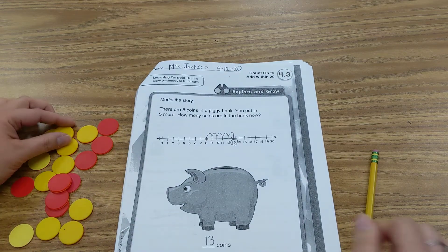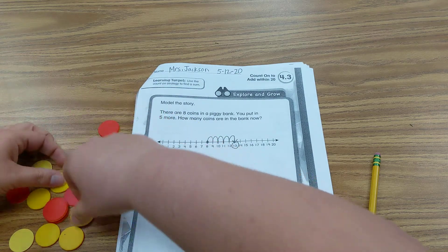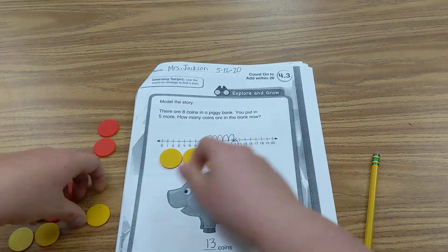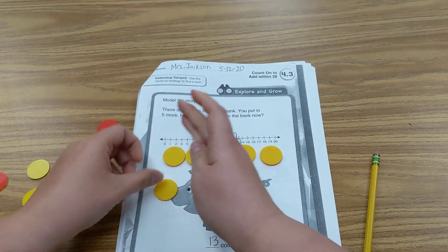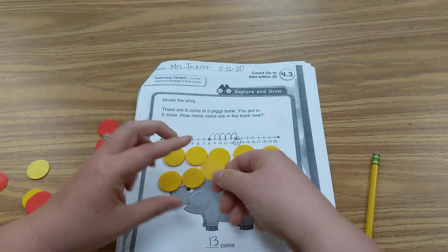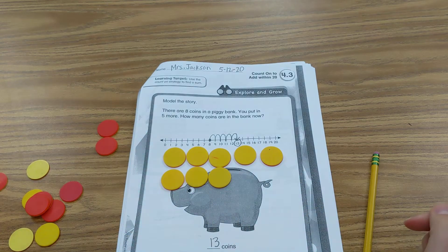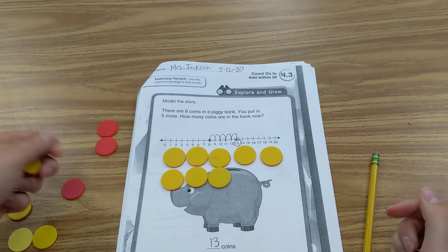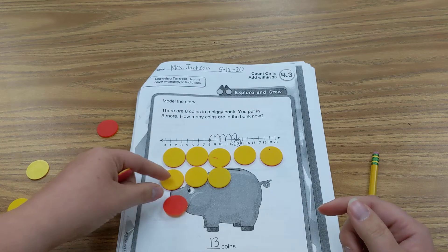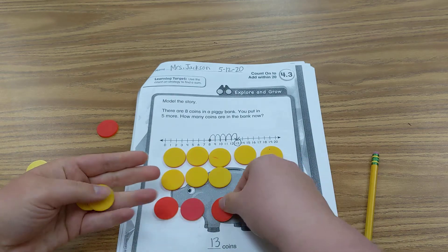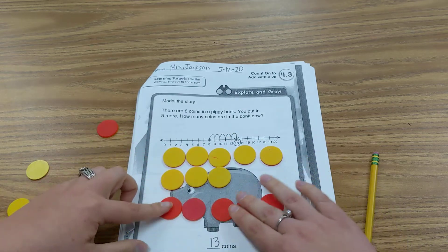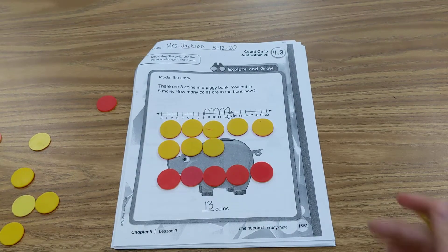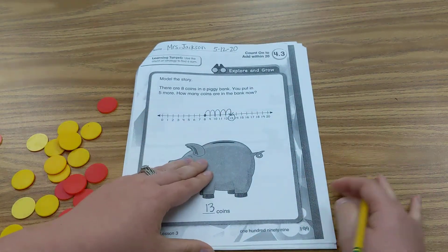So you could do it that way or you could do it like this. So we have 8 coins in my piggy bank. And then I put in 5 more. So 1, 2, 3, 4, 5. 8, 9, 10, 11, 12, 13. 13 coins. Okay. Now we're going to go ahead and clear our board and move forward.